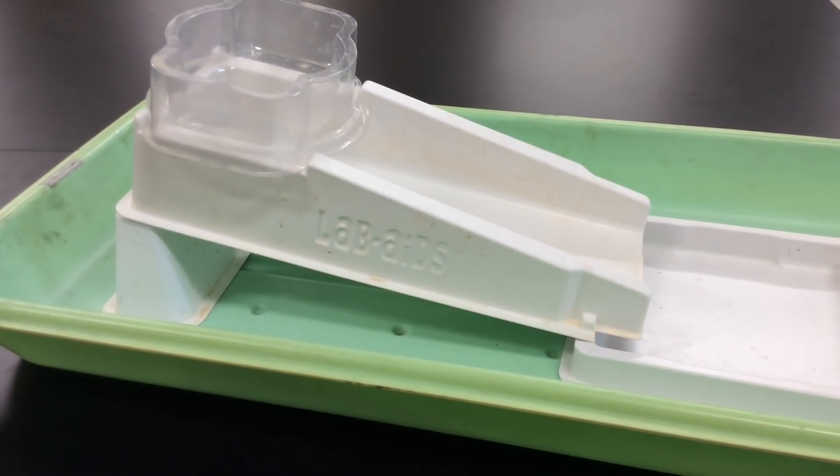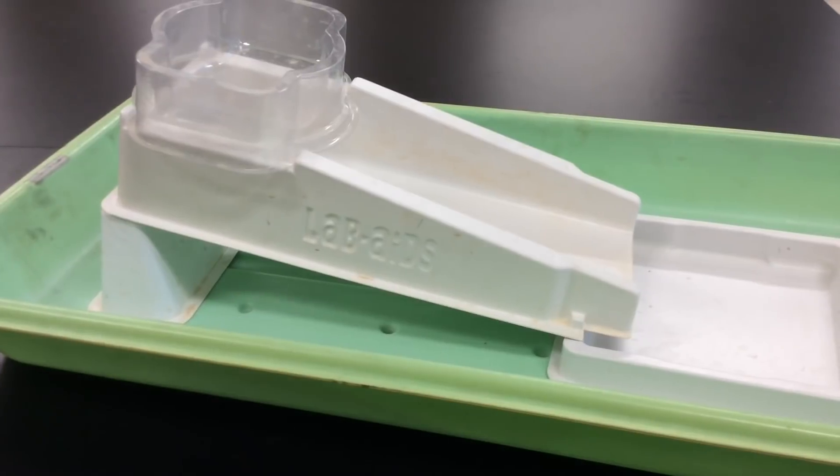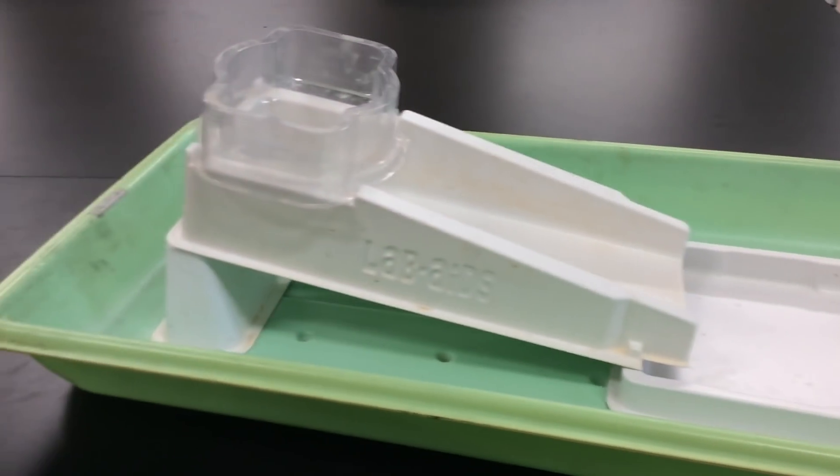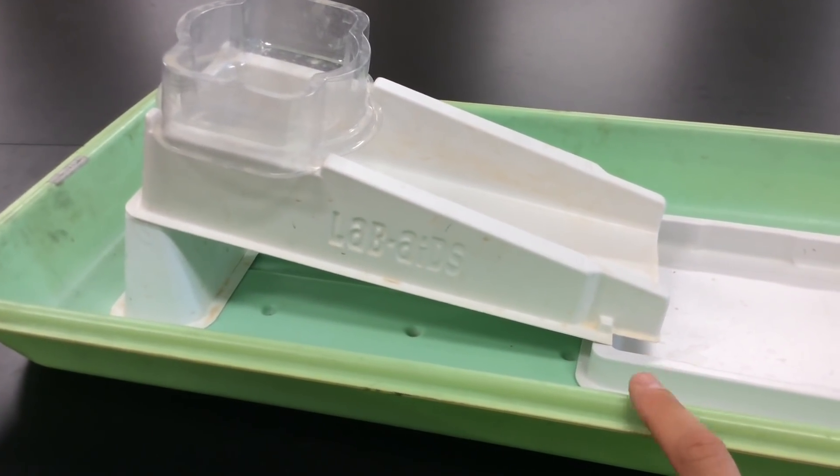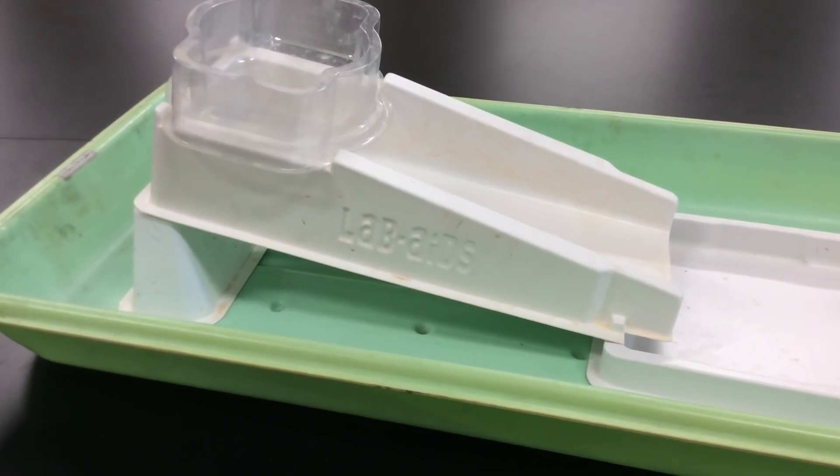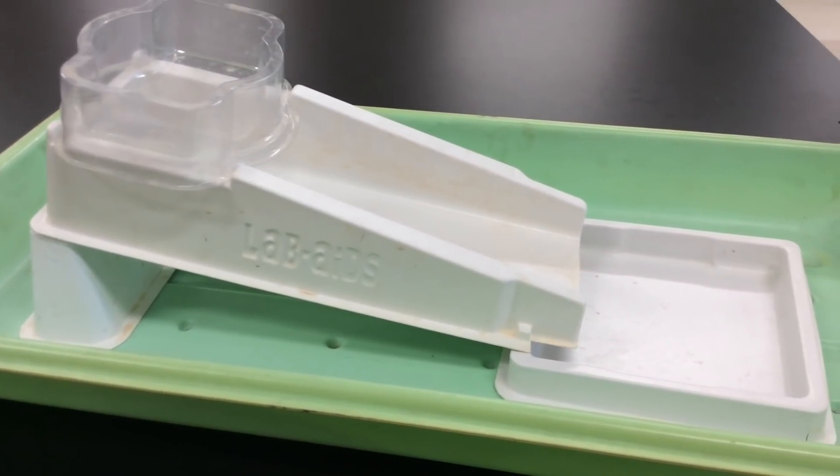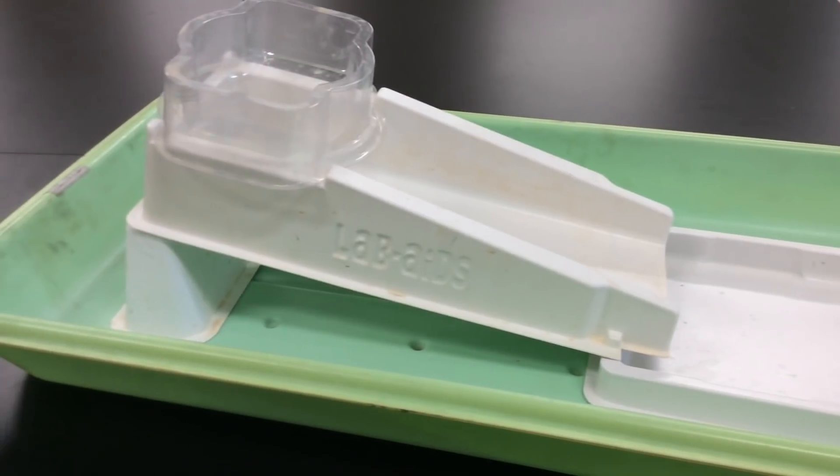All right, so this is a shot of what your river model is going to look like once it is completely set up. Just a note, we're using these green plastic bins tomorrow. We're going to keep everything for the river model in the green plastic bin so we don't make a huge mess with all the sand and water.